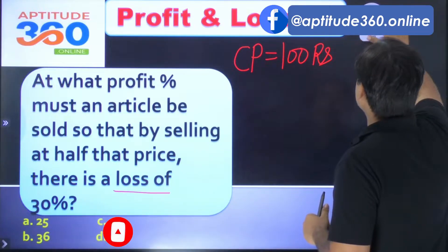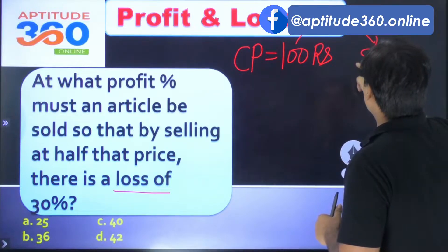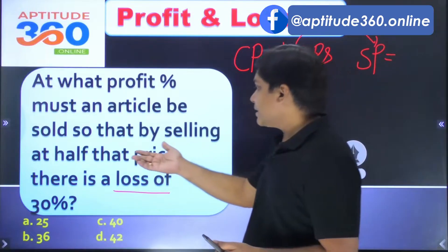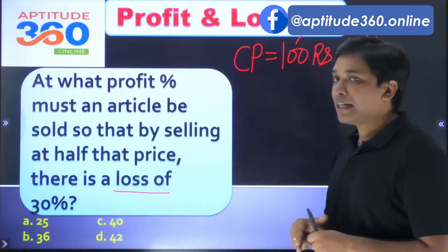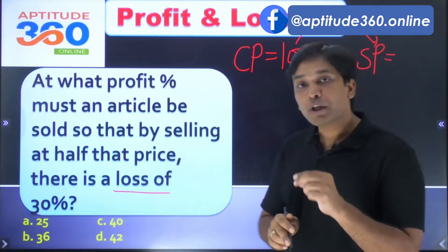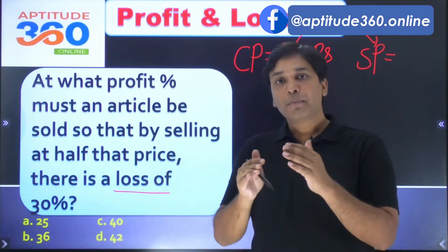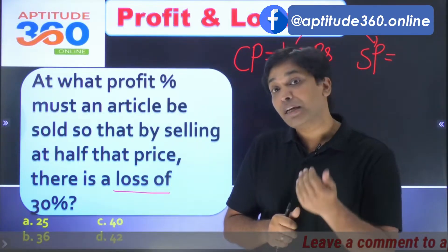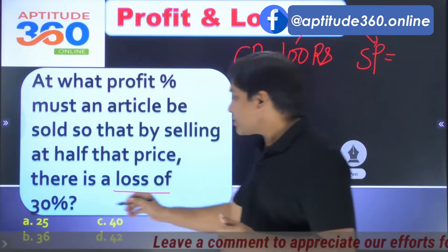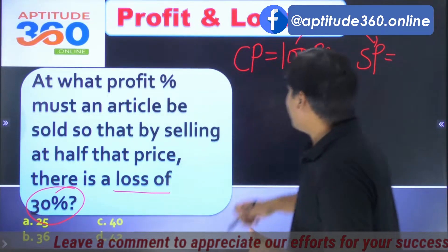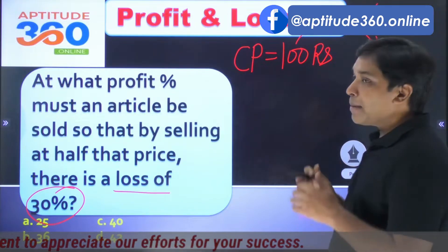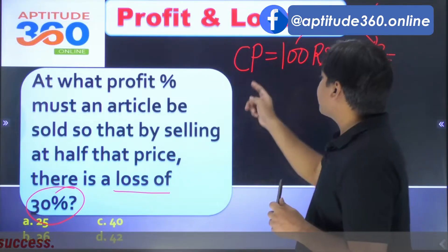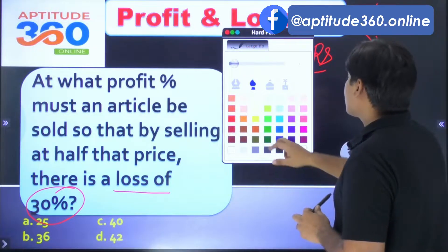There should be some profit percentage, and then you will have some selling price. What is the profit percent? We don't know. It says that if you sell at half of that price, there is going to be a loss of thirty percent. Both this thirty percent loss and the x percent profit are going to be calculated on the cost price, which we have taken as 100 rupees.